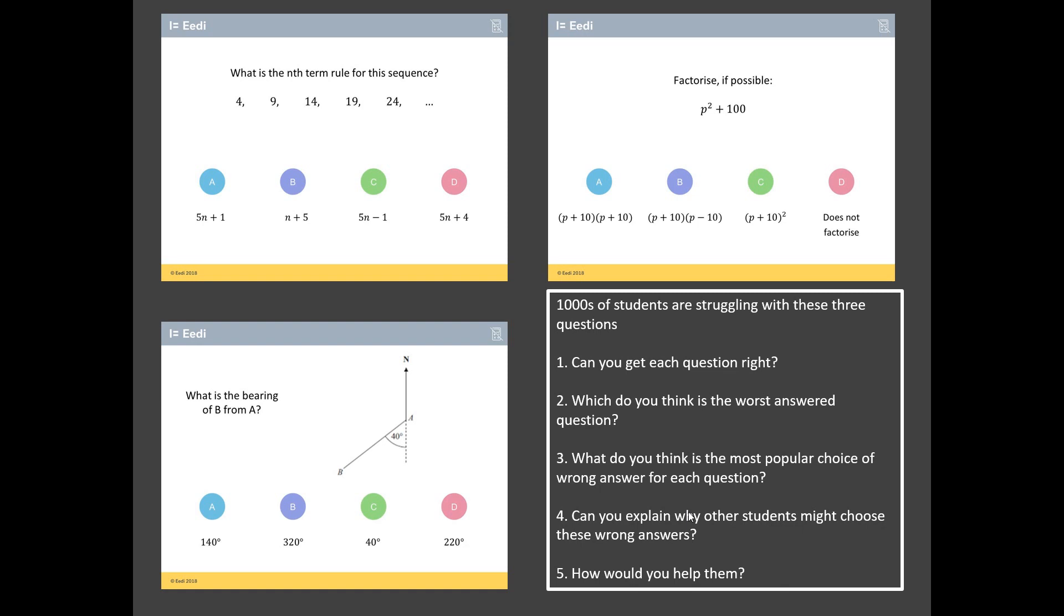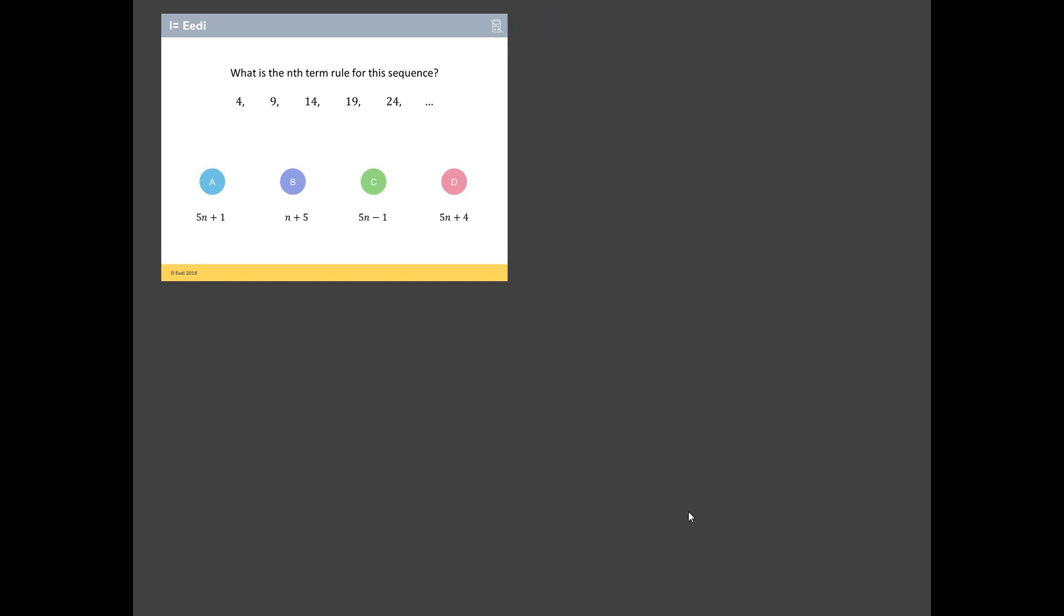Okay, have you got your answers? Nice one. Right, let's go through these and for a bit of drama, we'll do it in reverse order. So we're going to start with the least worst answered question first. And it is the question on sequences. So what is the nth term rule for the sequence that starts 4, 9, 14, 19, 24? So nth term rule, we're looking here for an algebraic rule involving n that's going to allow us to find any term in this sequence. And to help us do that, we've got the first five terms.